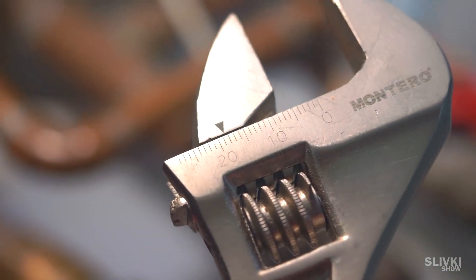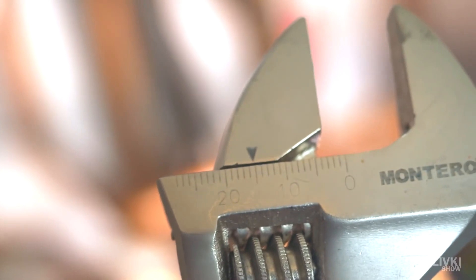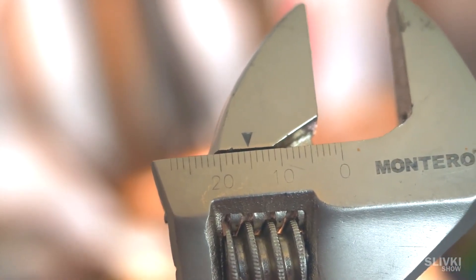Just take your wrench, place it on the pipe, check the scale and see the diameter in millimeters. We got around 15 millimeters.